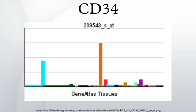CD34 is also an important adhesion molecule and is required for T cells to enter lymph nodes. It is expressed on lymph node endothelia, whereas the L-selectin to which it binds is on the T cell.